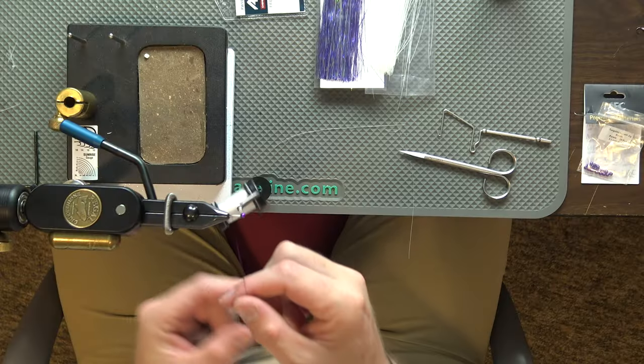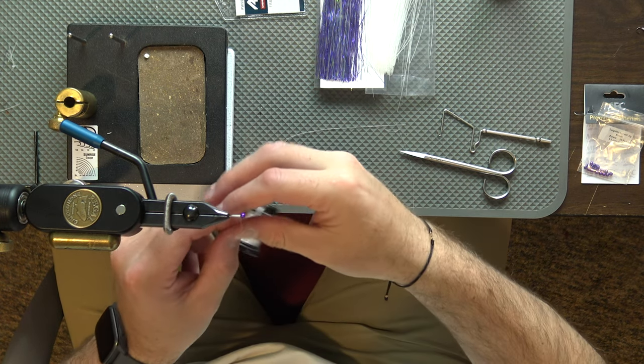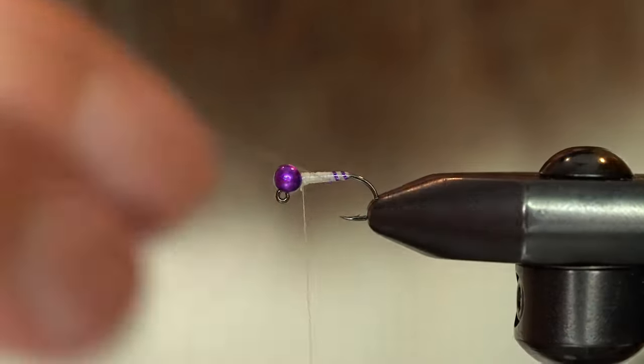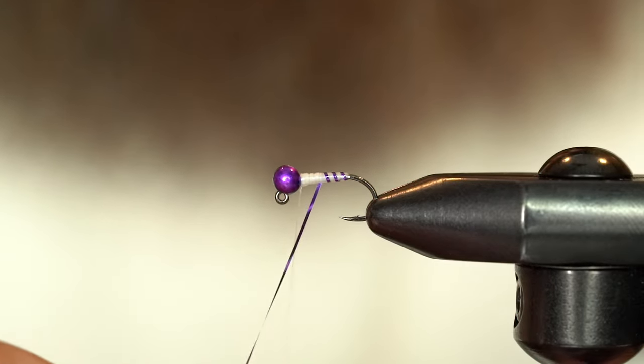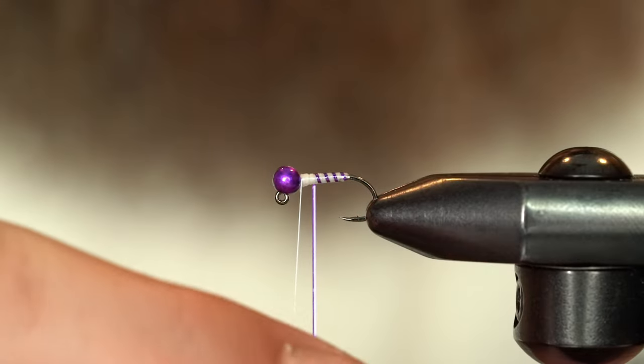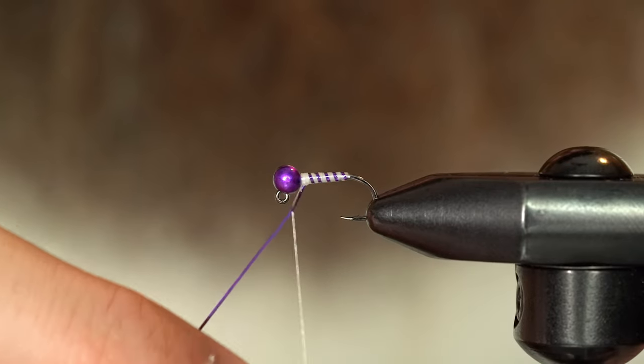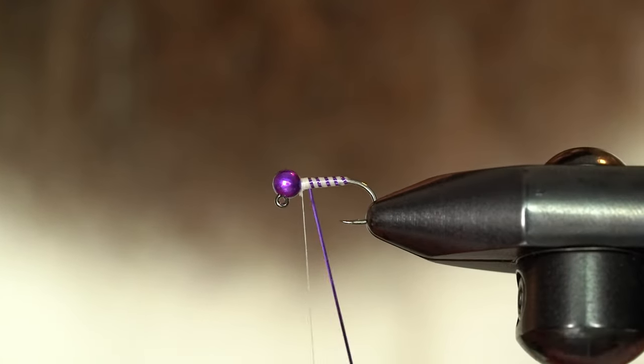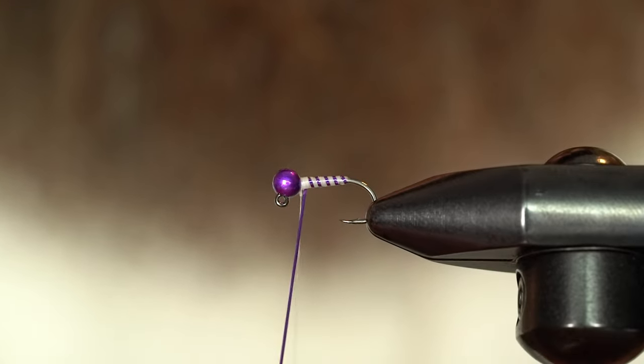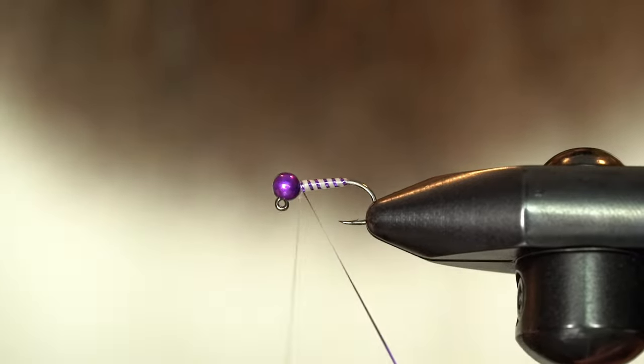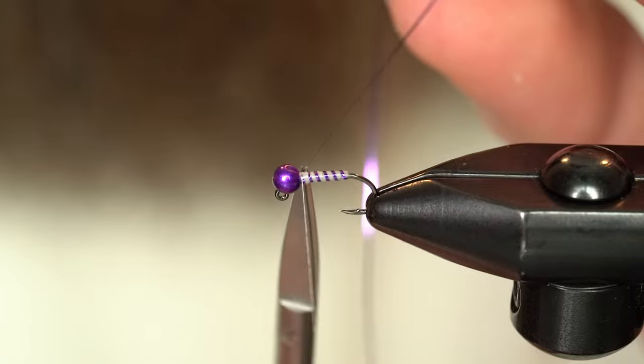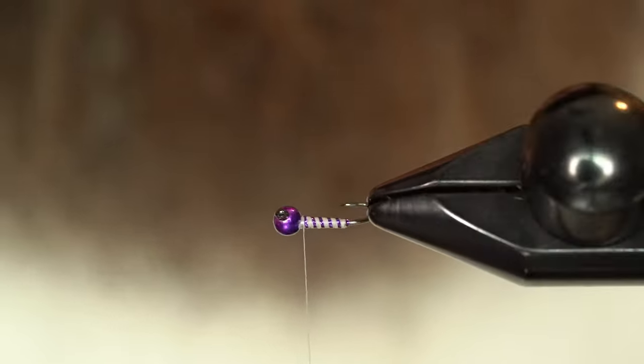Now we can go ahead and take our rib and wrap towards me. Then you are going for some nice even segmentation. Putting some pressure, but not too much. Stuff is a little bit slippery, so try to get it as close as you can. And I'll capture that. Leave a little bit of space for the collar. Nice even segmentation.